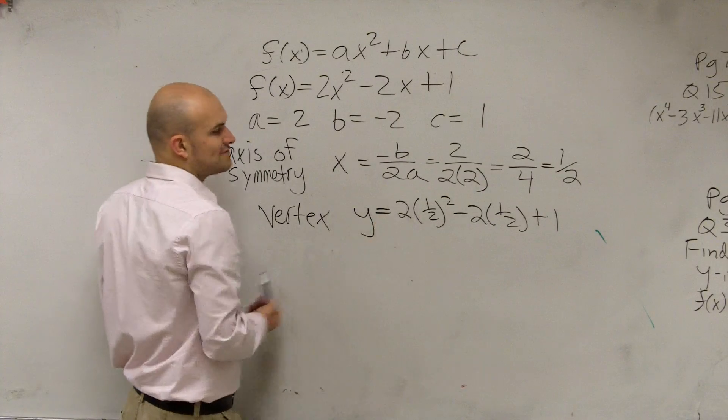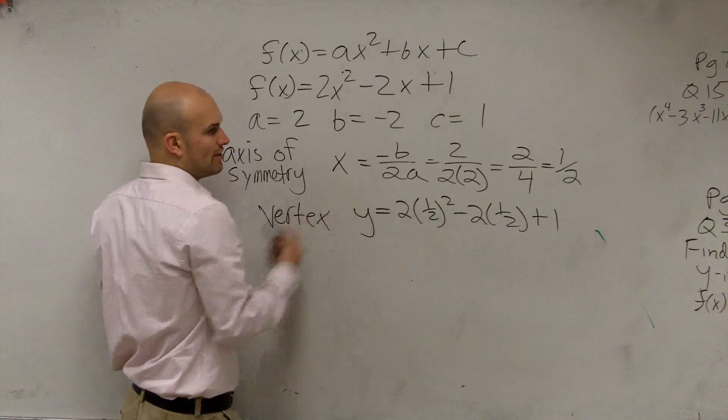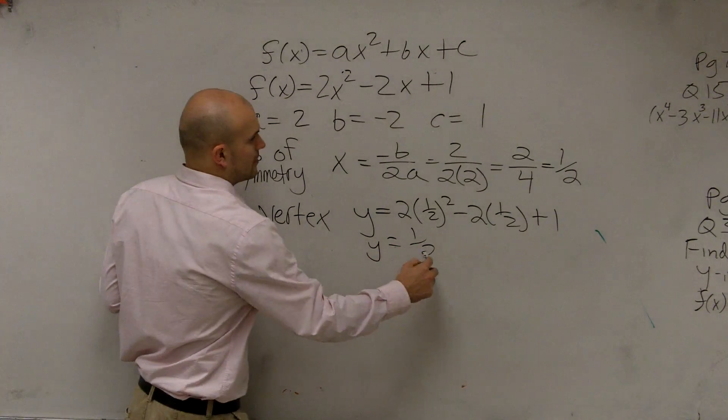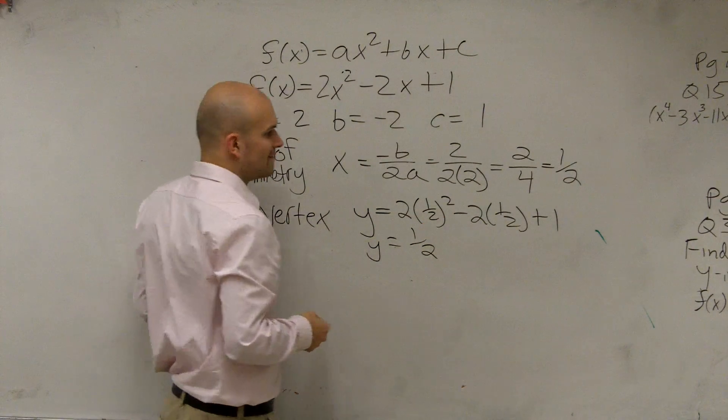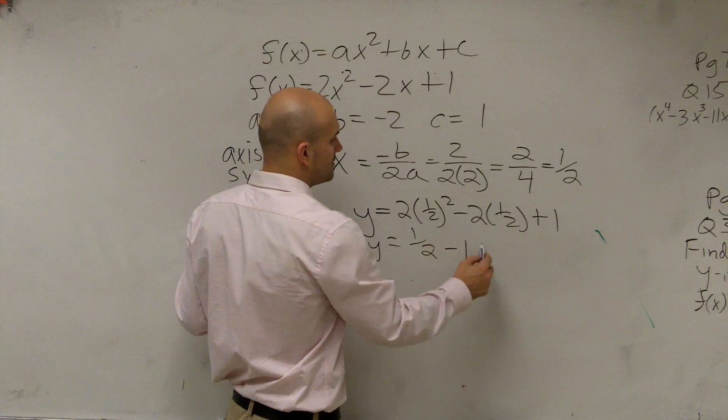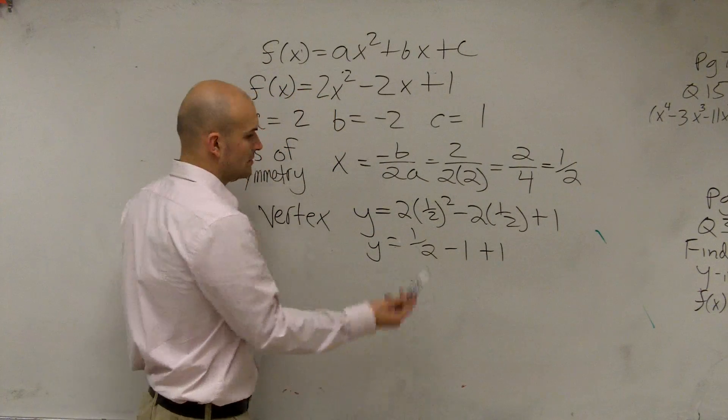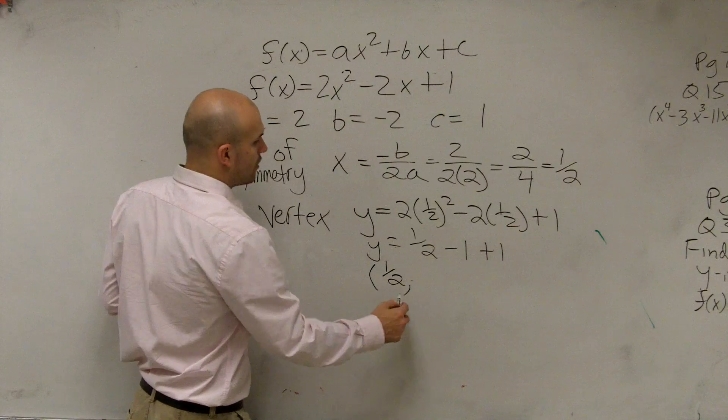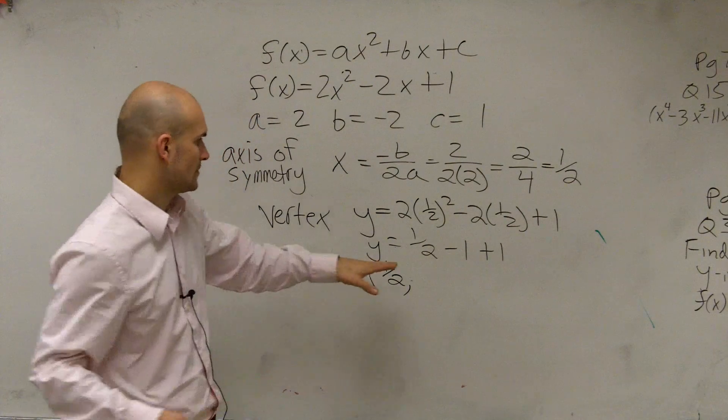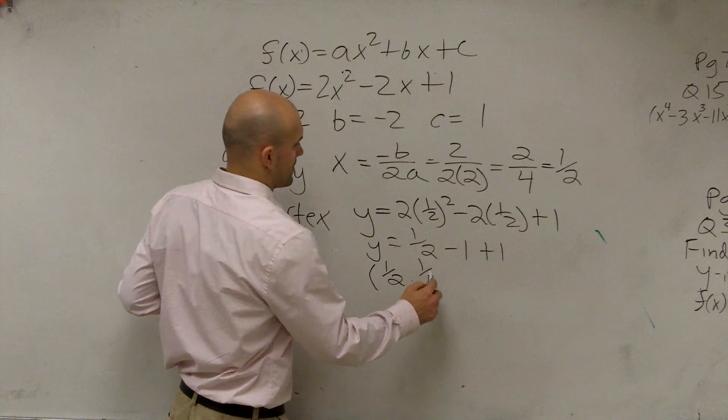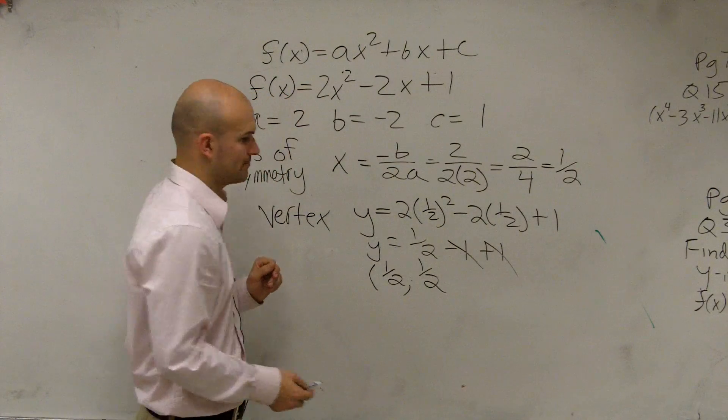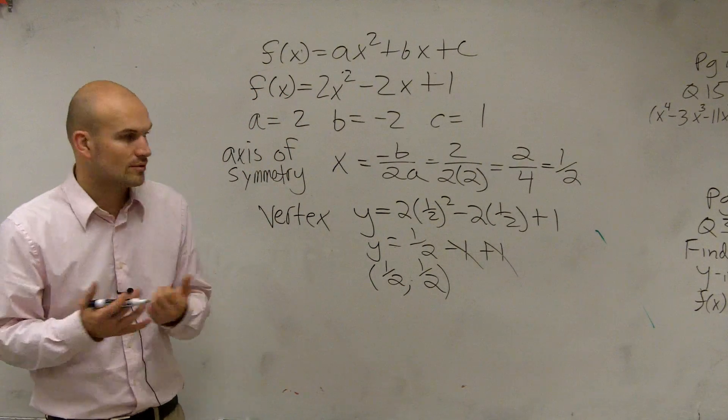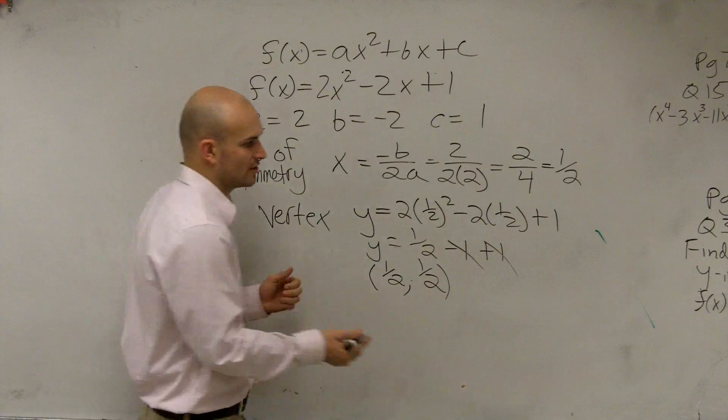So now you have 1 half squared, which is 1 fourth. 1 fourth times 2 is going to be 2 fourths, which is 1 half. Negative 2 times 1 half is going to be a negative 1 plus 1. So therefore, my vertex is now going to be the point 1 half comma 1 half. Because those two terms add up to 0. So now I have a vertex of 1 half, 1 half. So let's go ahead and start graphing this and take a look at it.